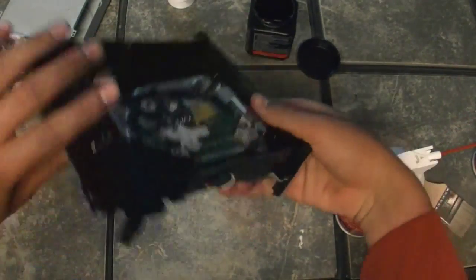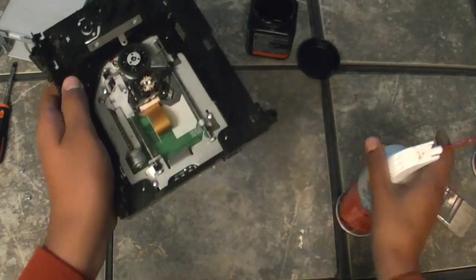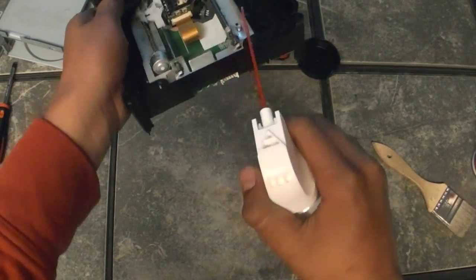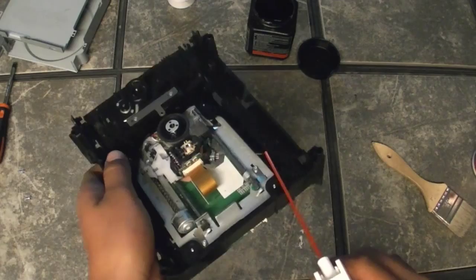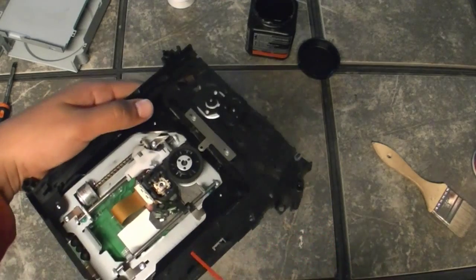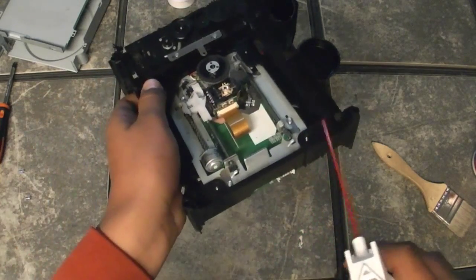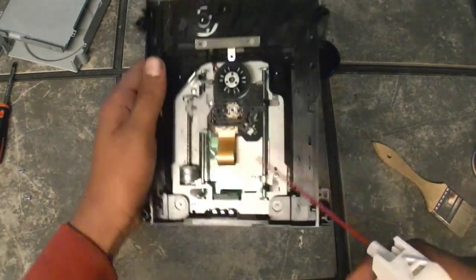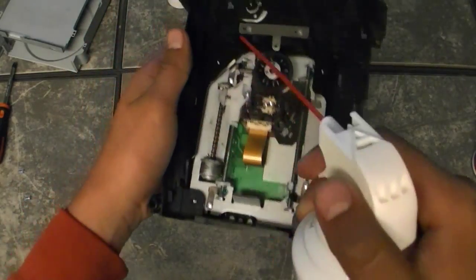When you blow the can of air, try not to blow directly at the laser. Try to blow it around, like around, because if you blow like this, the dirt could get on top of the laser. So try to blow it the opposite way, the opposite direction of the laser.